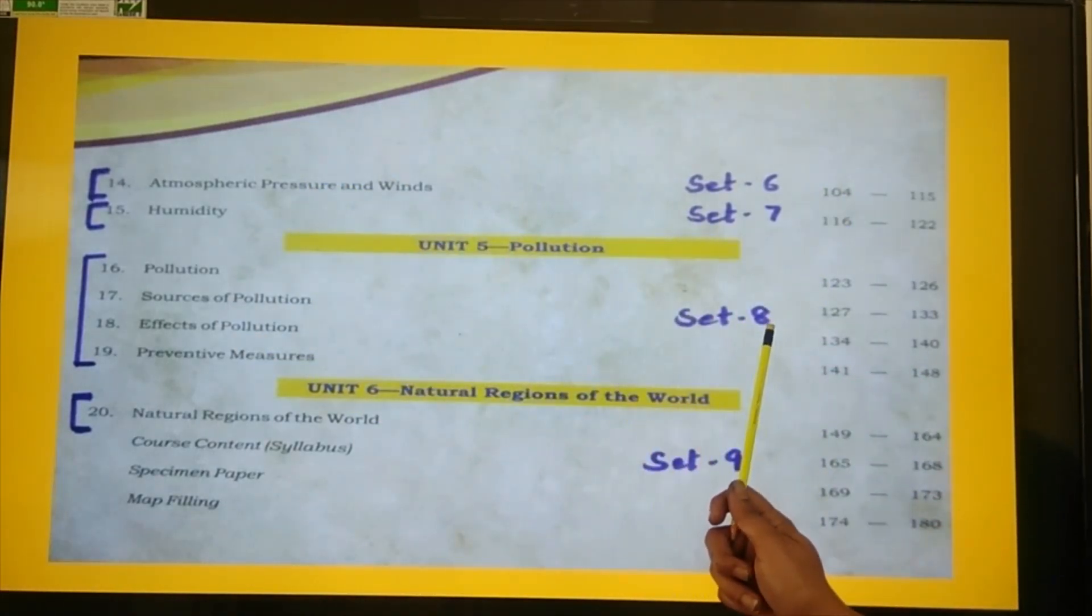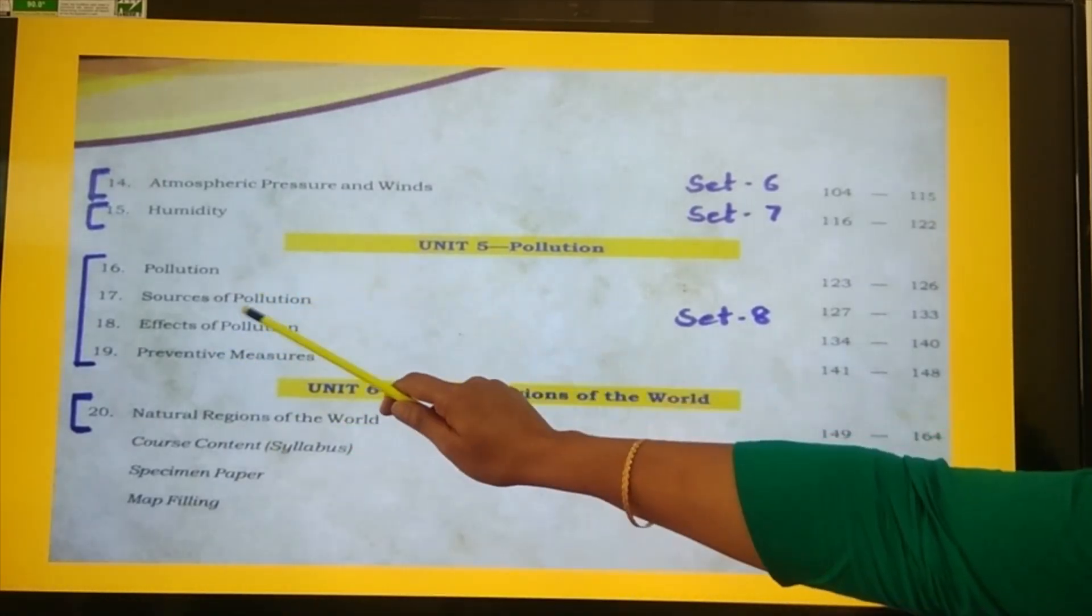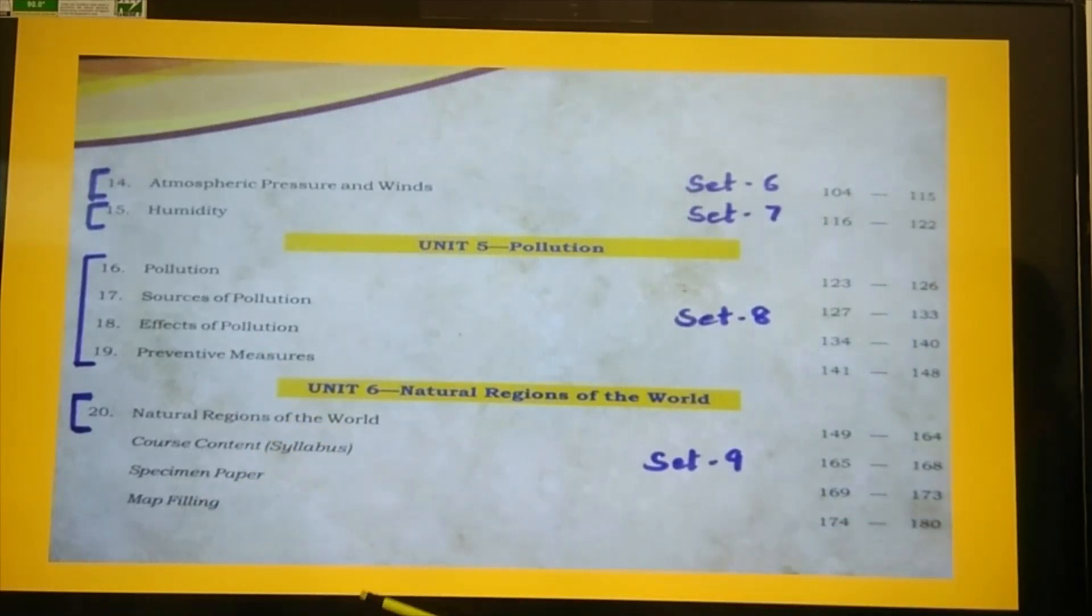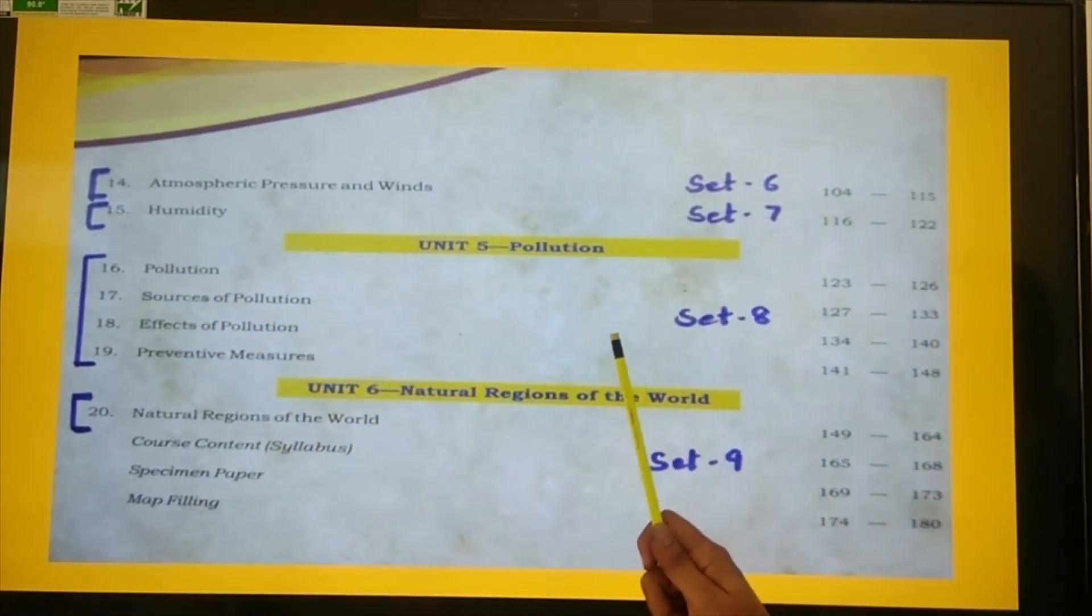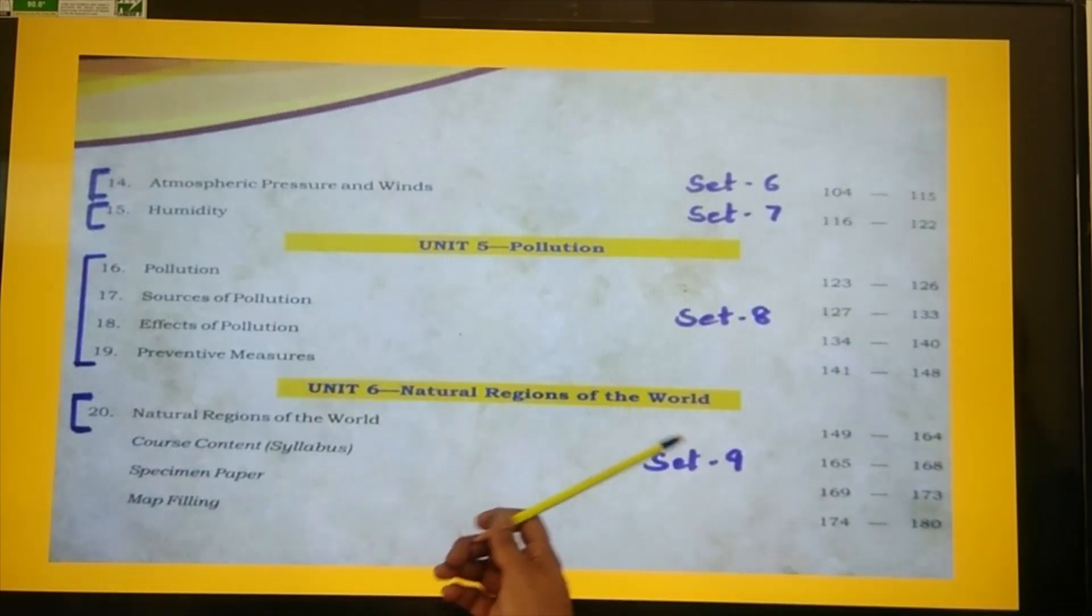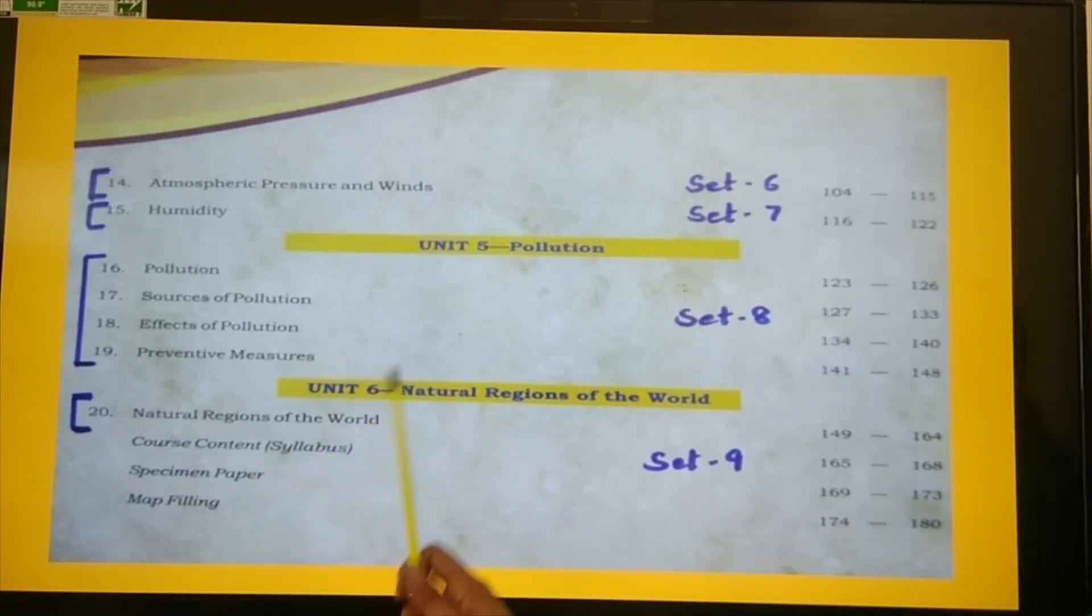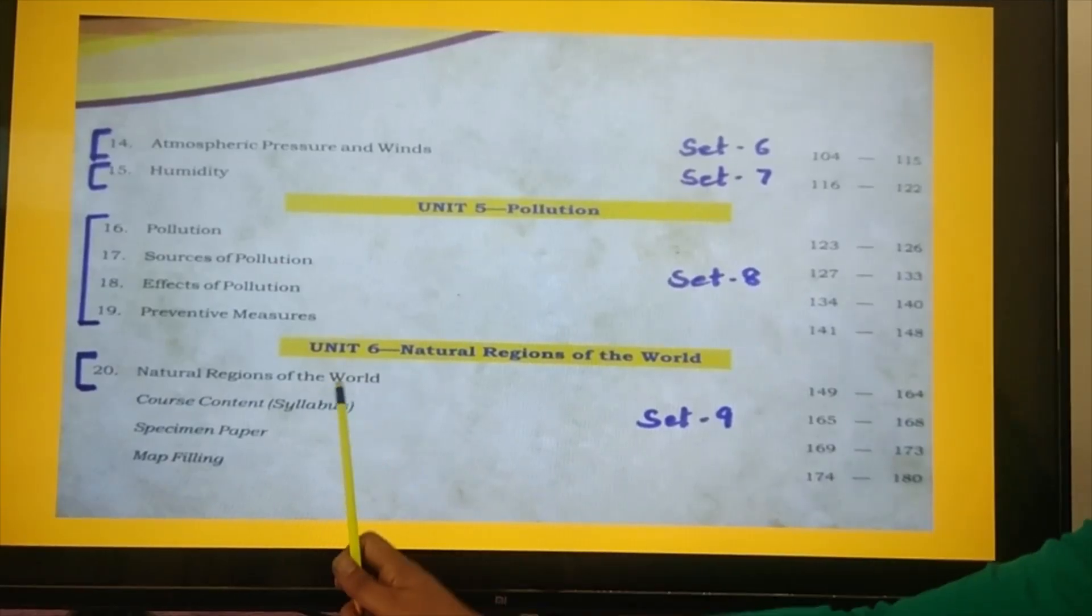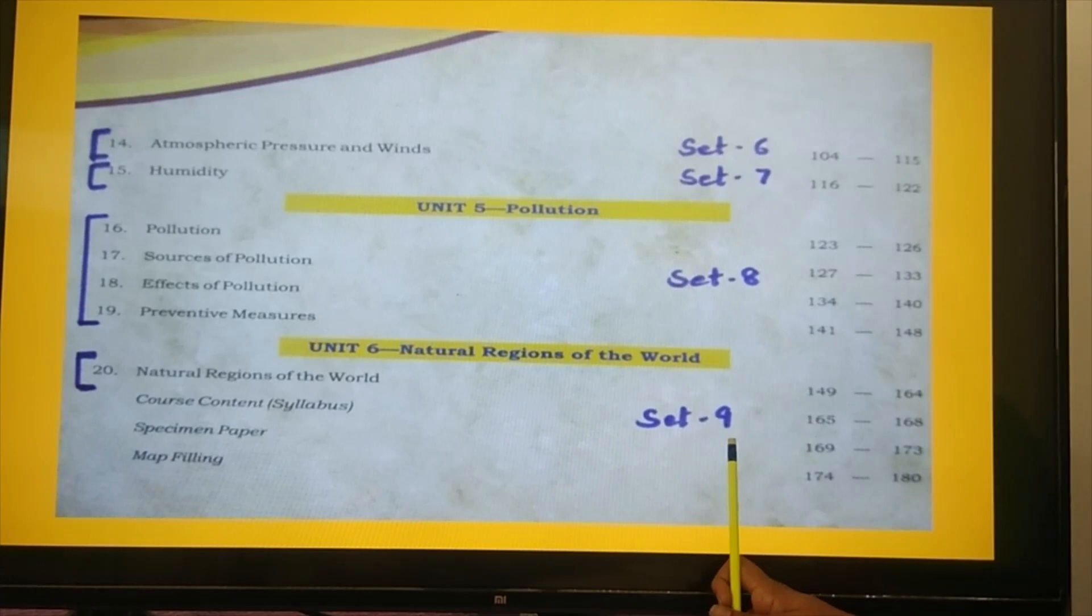Now set 8 has 4 chapters: Pollution, Source of Pollution, Effect of Pollution, and Preventive Measures. So out of these 4 chapters, 1 question will come. Set 9 is Natural Regions of the World. This is a single but lengthy chapter, and from this chapter also 1 question will come. So all together 20 chapters in geography and 9 sets are there.